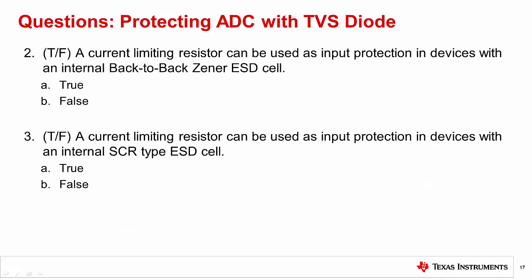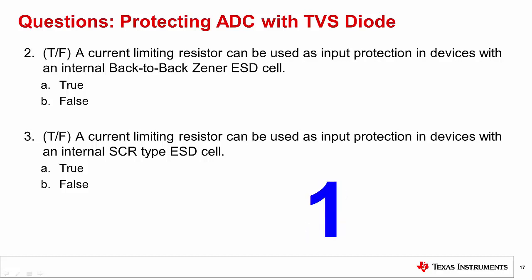Question two: True or false — a current limiting resistor can be used as input protection in devices with an internal back-to-back Zener ESD cell. The correct answer is true. For devices with an internal back-to-back Zener, a simple series resistor provides basic protection. In cases where continuous or multiple repeated faults can occur, an additional external Zener is recommended.